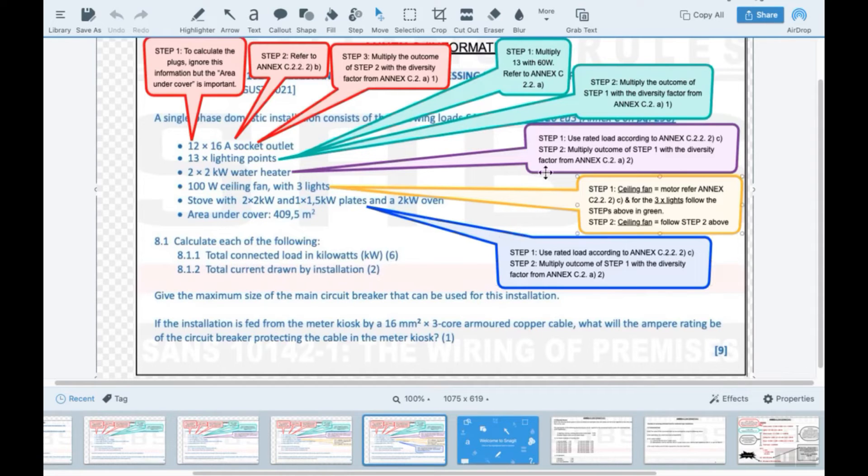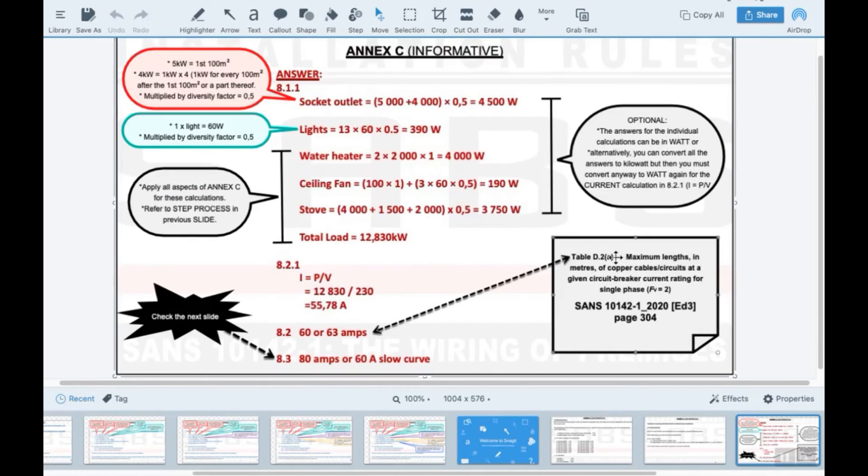So after you've found all the watts, you need to add them, and that would be 8.1.1. All those that you worked out is for that, that's six marks. What does it look like? This is what it looks like, that's 8.1.1. Then 8.2.1 you have a formula. Now just as an extra note, optional, you can do all of this in kilowatt. But the issue is that you can have to convert it here again to watts, so it's probably easy to just work in watts and then just give the answer here, the total load in kilowatt.